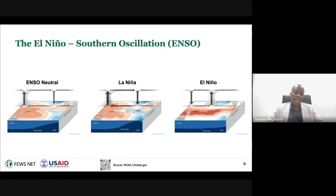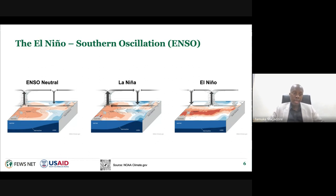El Niño Southern Oscillation is a naturally occurring phenomenon which occurs in the Pacific Ocean, and it has three states. These can be either ENSO neutral—where ENSO stands for El Niño Southern Oscillation—which is the normal phase, then La Niña phase, and finally the El Niño phase, which is what we'll be focusing on today.